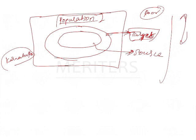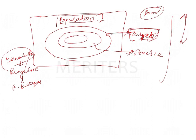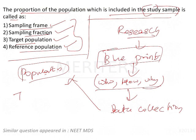We are going to calculate for the whole country, but we take only Karnataka. From that, source population will be Bangalore, then further narrowed to Arkane Nagar as the study population. Always remember this order: target population is greater than source population, which is greater than study population.